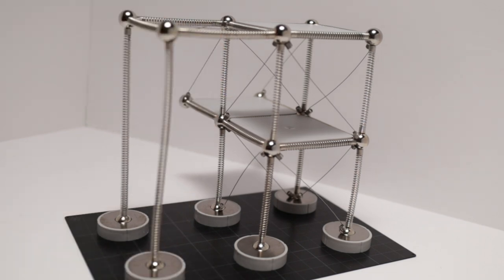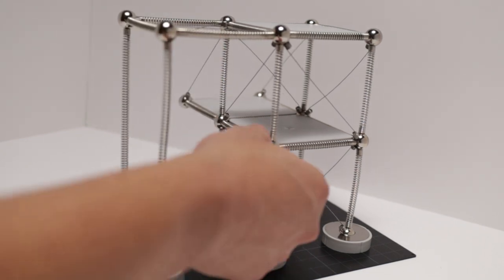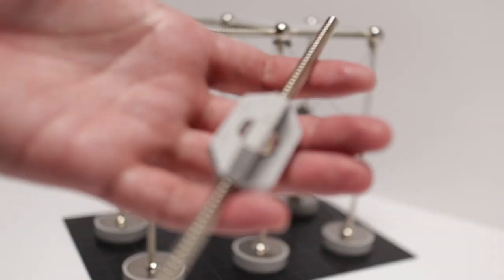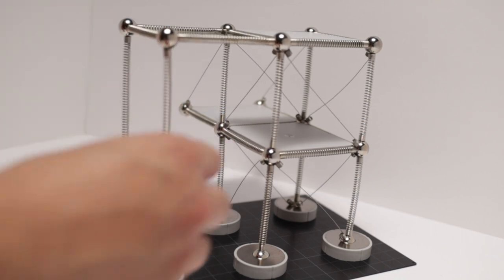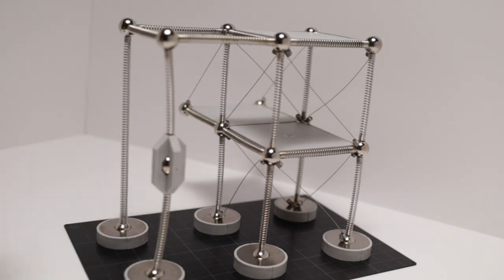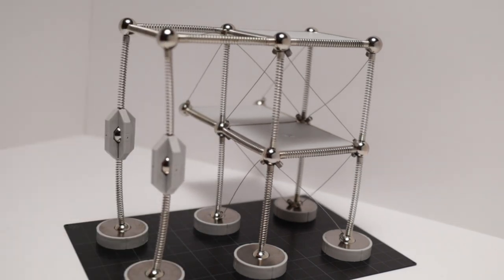So if you don't want to add a column stiffener to this, we can try bracing it on both of its sides. Just so we have a point of connection, we're going to have a column splice connection shown here. As you can see, it still buckles, but let's add a brace on one side.